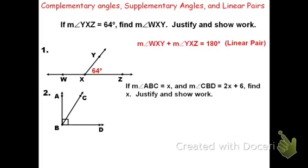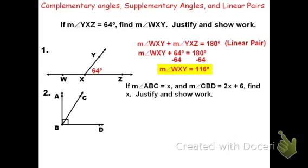Substituting what we know, the measure of angle YXZ is 64 degrees. To solve for the missing angle, we subtract 64 from both sides, and we find that the measure of angle WXY is 116 degrees.